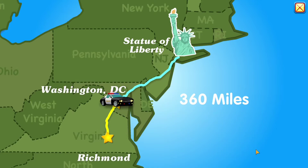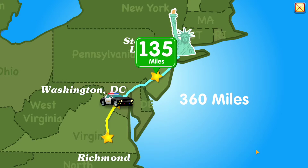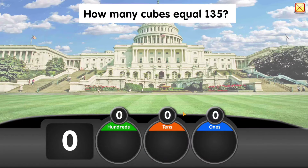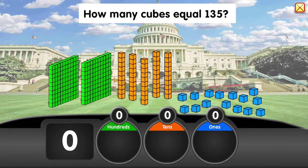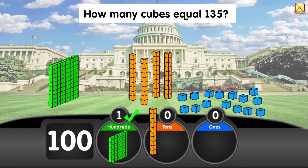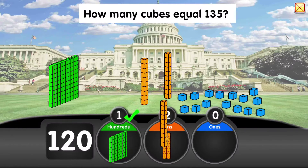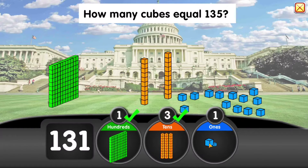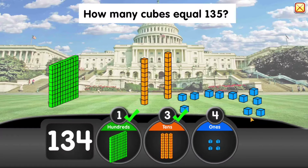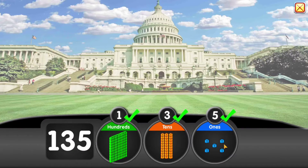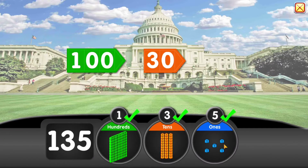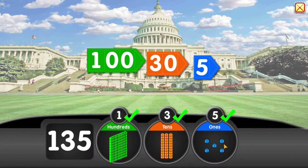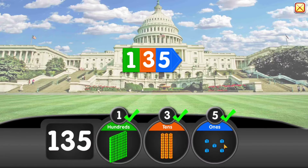Our next stop is 135 miles away. How many cubes equal 135? 100 plus 30 plus 5 equals 135.